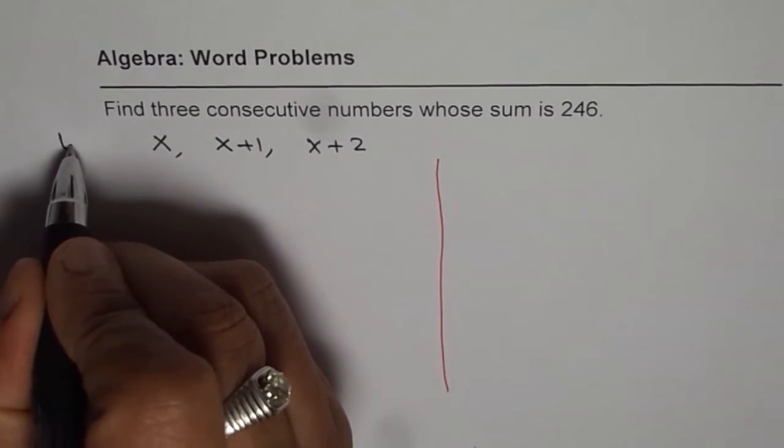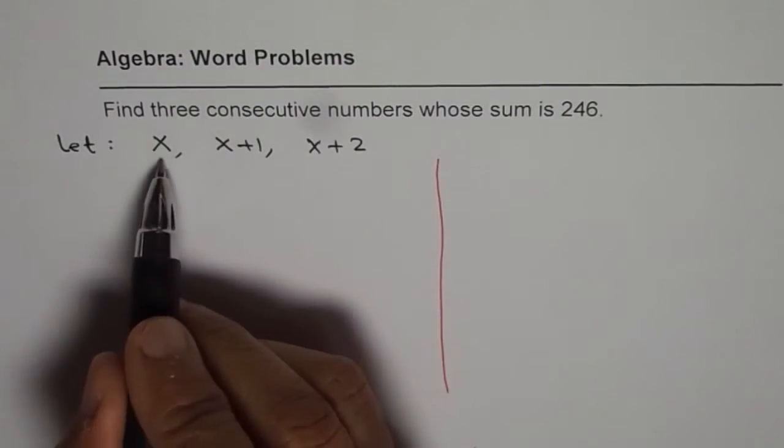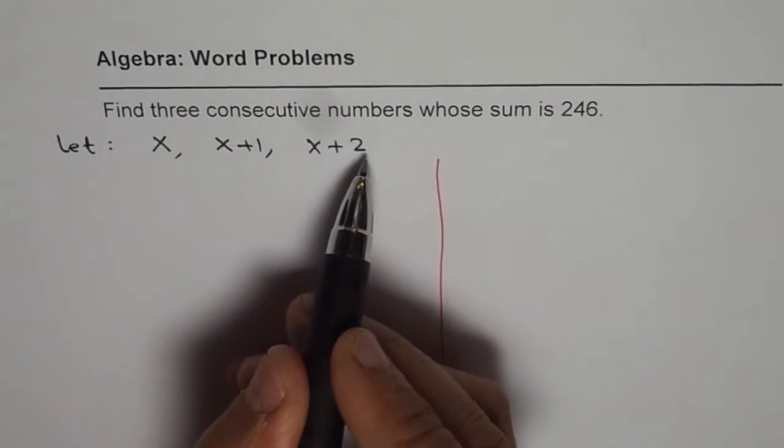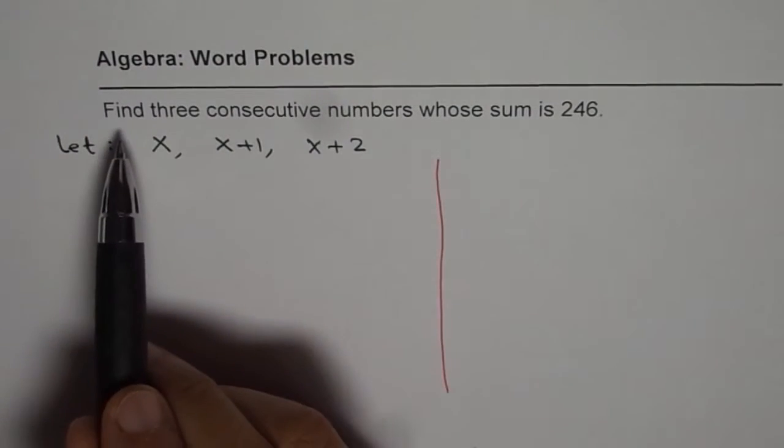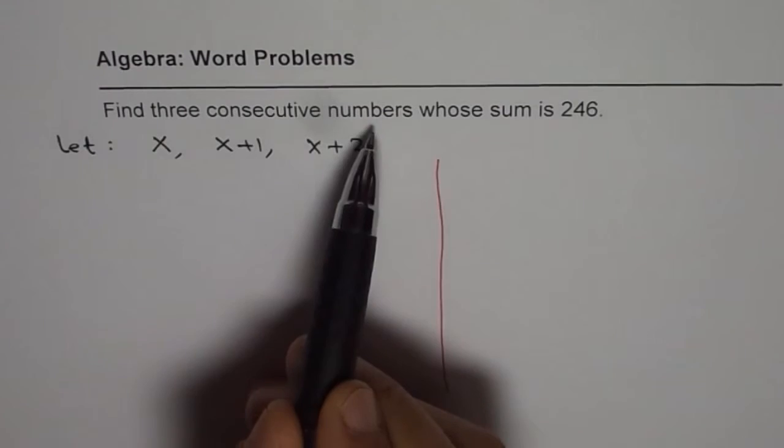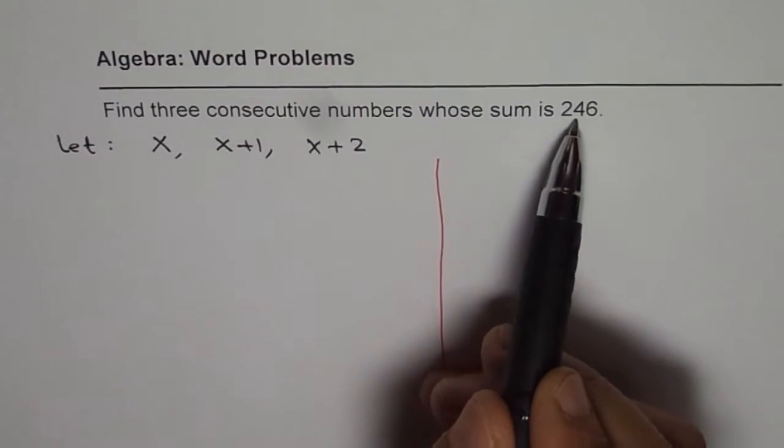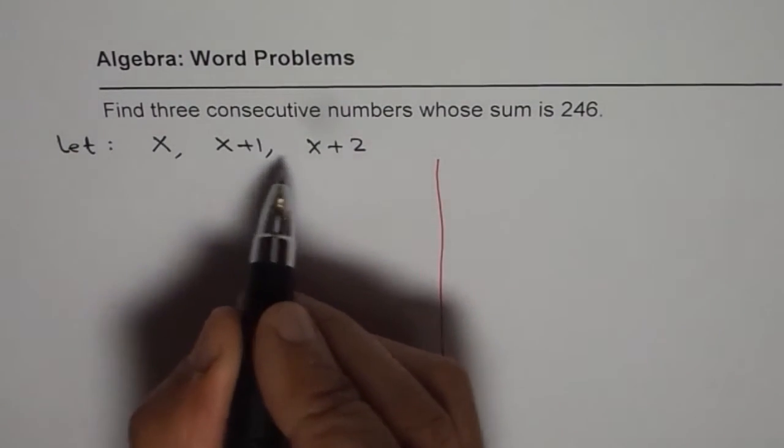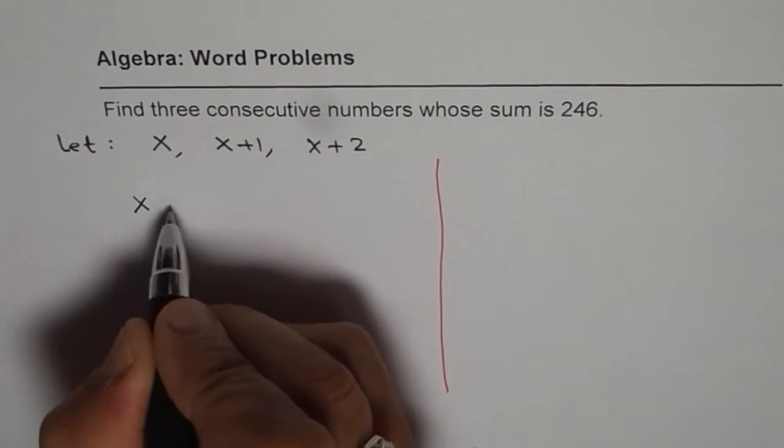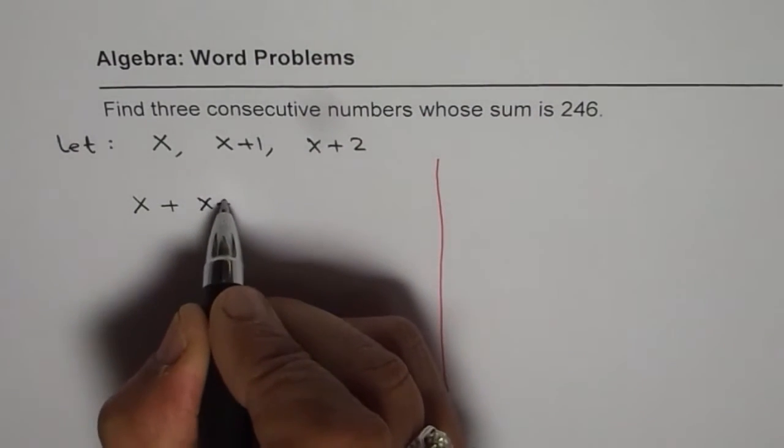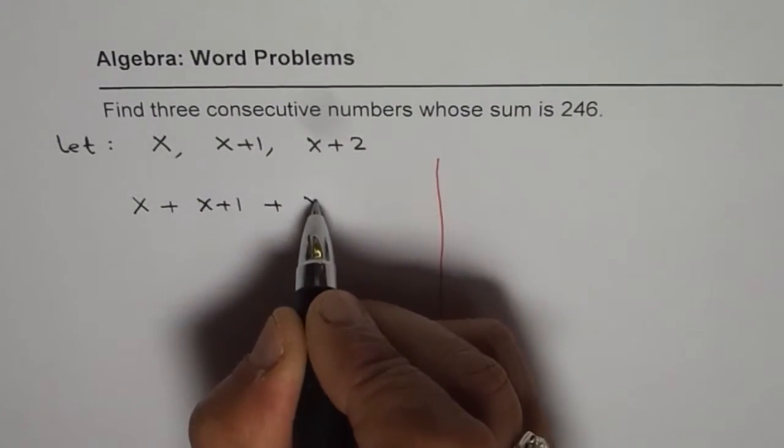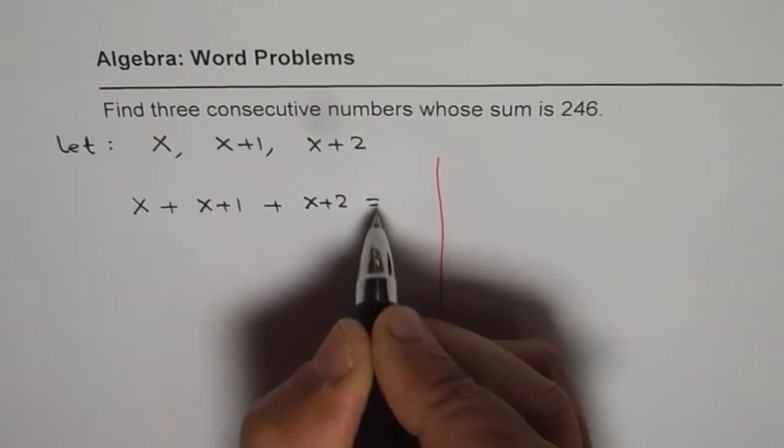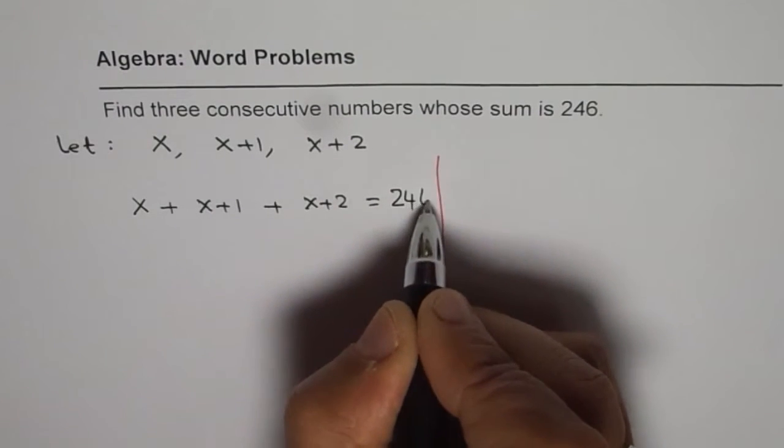So, we say let our numbers be x, x plus 1, and x plus 2. Question is, find three consecutive numbers whose sum is 246. So, when we add them up, you should get 246: x plus x plus 1 plus x plus 2 equals 246.